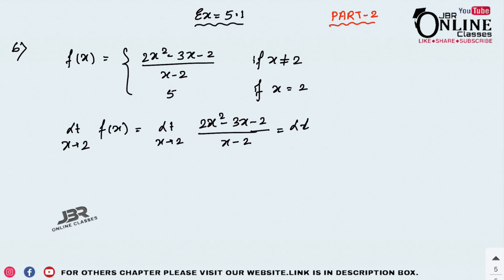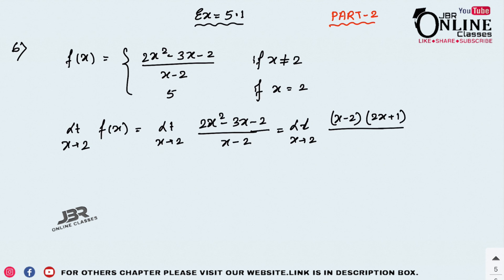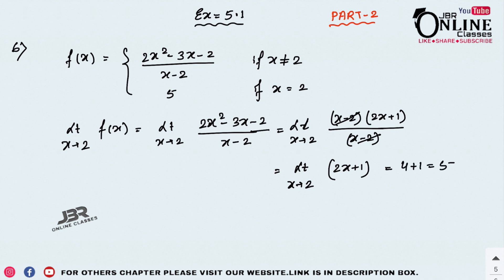So the limit as x tends to 2 of 2x² - 3x - 2 — I'm going to factorize this as (2x + 1)(x - 2). The (x - 2) cancels, giving the value 4 + 1 = 5. Also f(2) = 5, so f is continuous at x = 2.